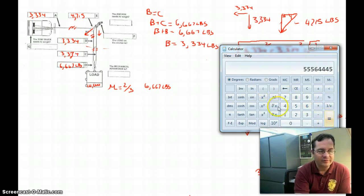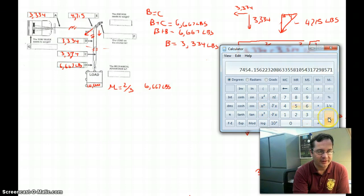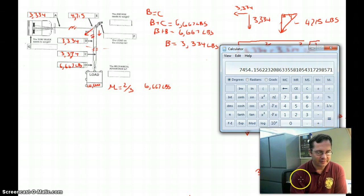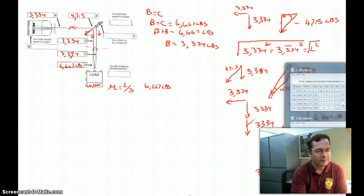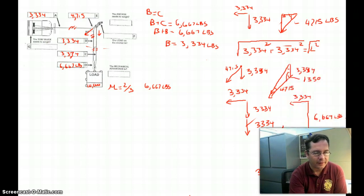So that equals the square of length L. Again, we'll take the square root by raising to the one-half power. And the force developed across those three lines is 7,454 pounds.